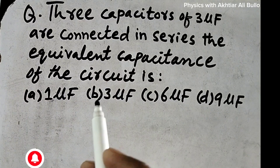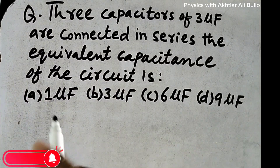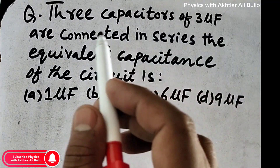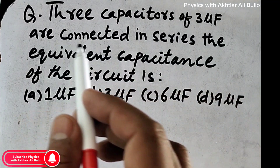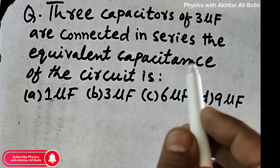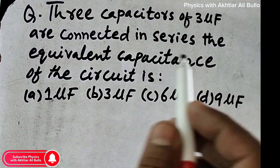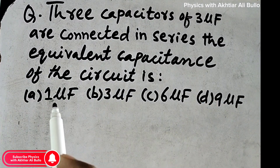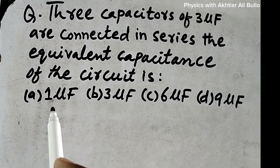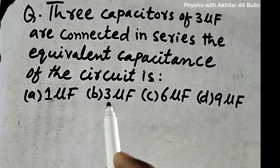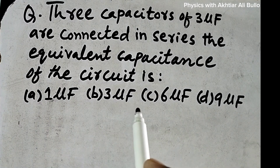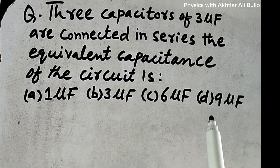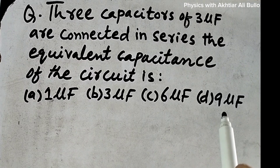The question is: three capacitors of three microfarads are connected in series. The equivalent capacitance of the circuit is — a, one microfarad; b, three microfarad; c, six microfarad; d, nine microfarad.